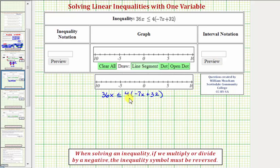We solve a linear inequality in one variable just like we solve an equation in one variable, except if we multiply or divide by a negative, we must reverse the inequality symbol.